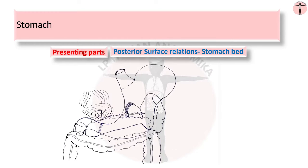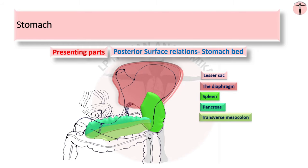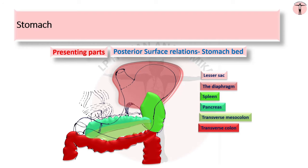Posteriorly, the stomach is related to structures forming the stomach bed, separated from the posterior surface by the lesser sac. The structures forming the stomach bed are: the diaphragm in the upper part; the spleen on the left side; the pancreas extending from right to left; the transverse mesocolon extending from the pancreas to the transverse colon; the transverse colon; the upper part of the left kidney; the left suprarenal gland; and the splenic artery.